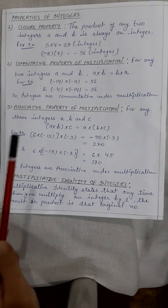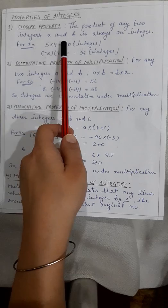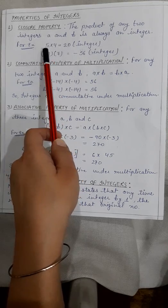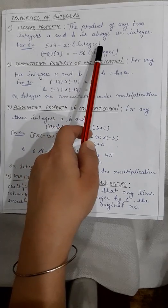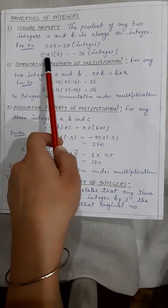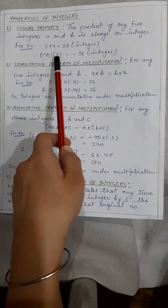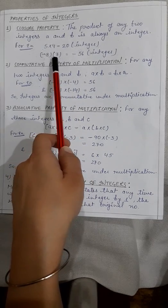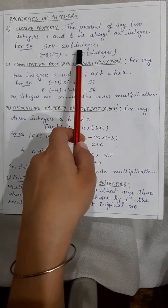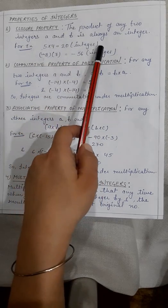Now the next topic is properties of integers. Let's start with the closure property. The product of any two integers a and b is always an integer value. For example, 5 multiplied by 4 gives 20, which is an integer. Also, minus 8 multiplied by 7: 8 into 7 is 56, and since the signs are different the result is minus 56, which is also an integer. So integers are closed under multiplication.